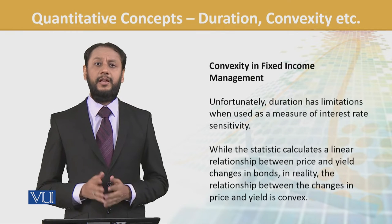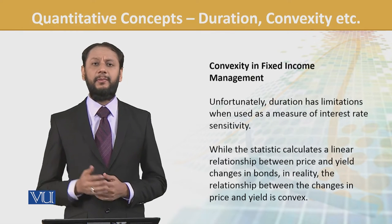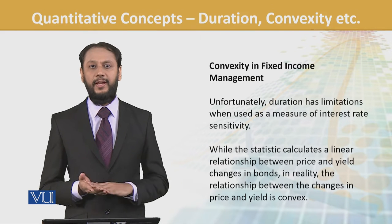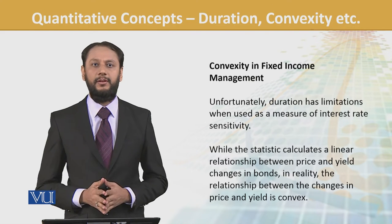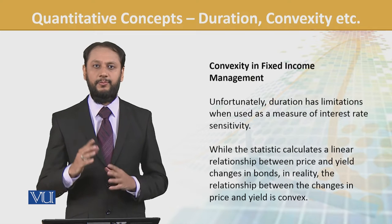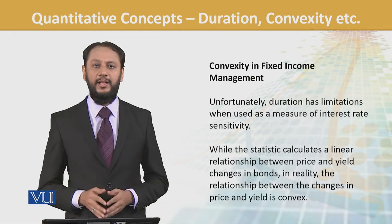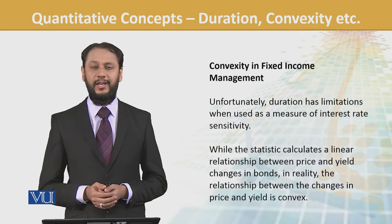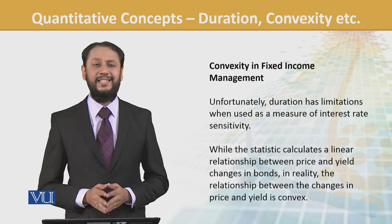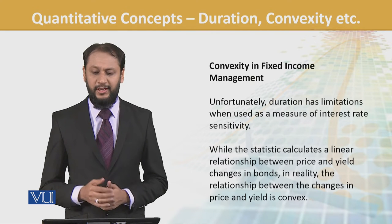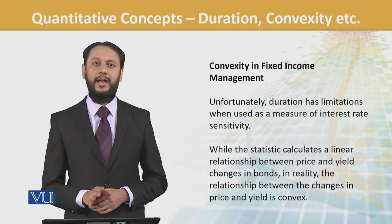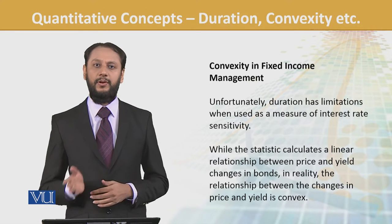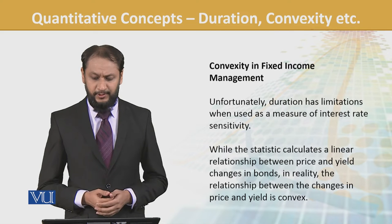Convexity — you may remember the terms concave and convex from your stats. Here, convexity is needed because unfortunately duration has limitations when used to measure interest rate sensitivity. Duration is good, but it has its own limitations that it doesn't capture well enough — that's why we need to move to convexity.